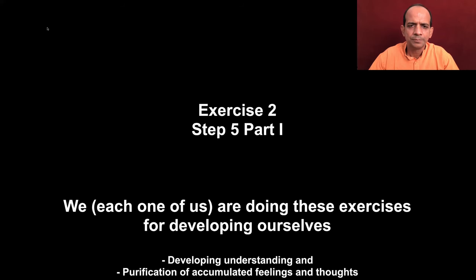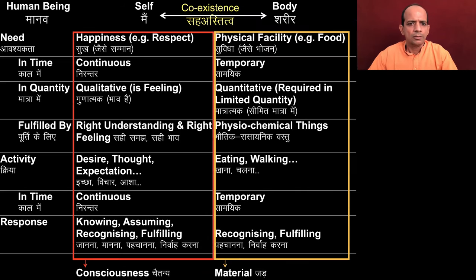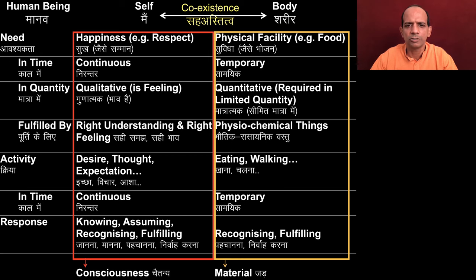I hope you have tried to observe this in the past week. Now, with that readiness to explore further, we go to discuss step 5 in two parts — part 1 today and part 2 in the next session. Through all this, what we are essentially trying to see is that the self and the body are two distinct realities, and through direct observation we are able to see the difference between their needs, activities, and responses.